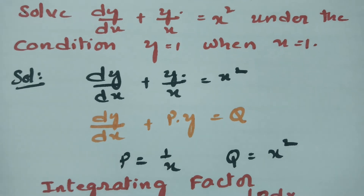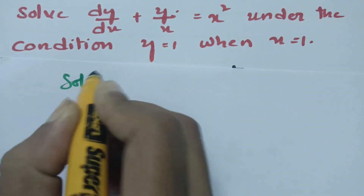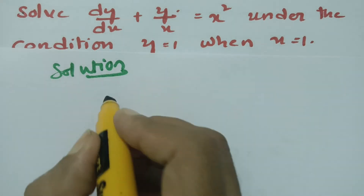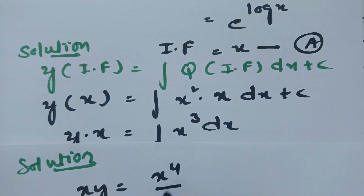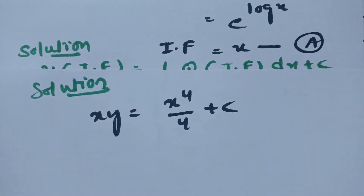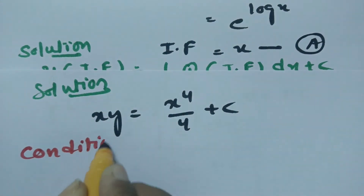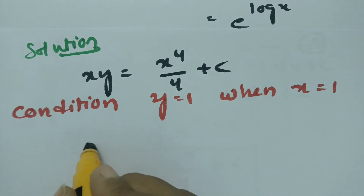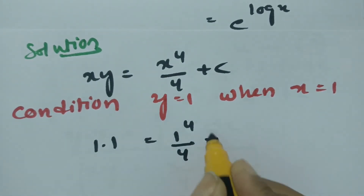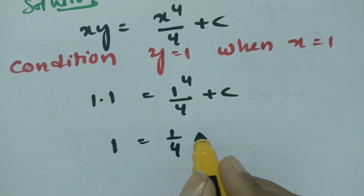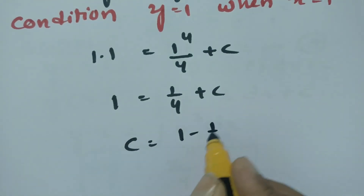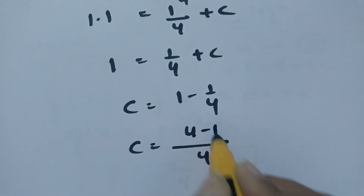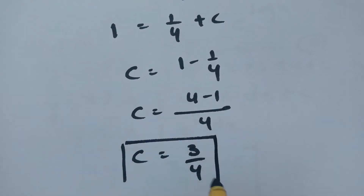But there is a condition: y equals 1 when x equals 1. The solution we got is x·y equals x⁴/4 plus c. When we put x equals 1 and y equals 1, we get 1 times 1 equals 1/4 plus c. So c equals 1 minus 1/4, and taking 4 as LCM, this is 4 minus 1 divided by 4, which equals 3/4. We got the c value as 3/4.